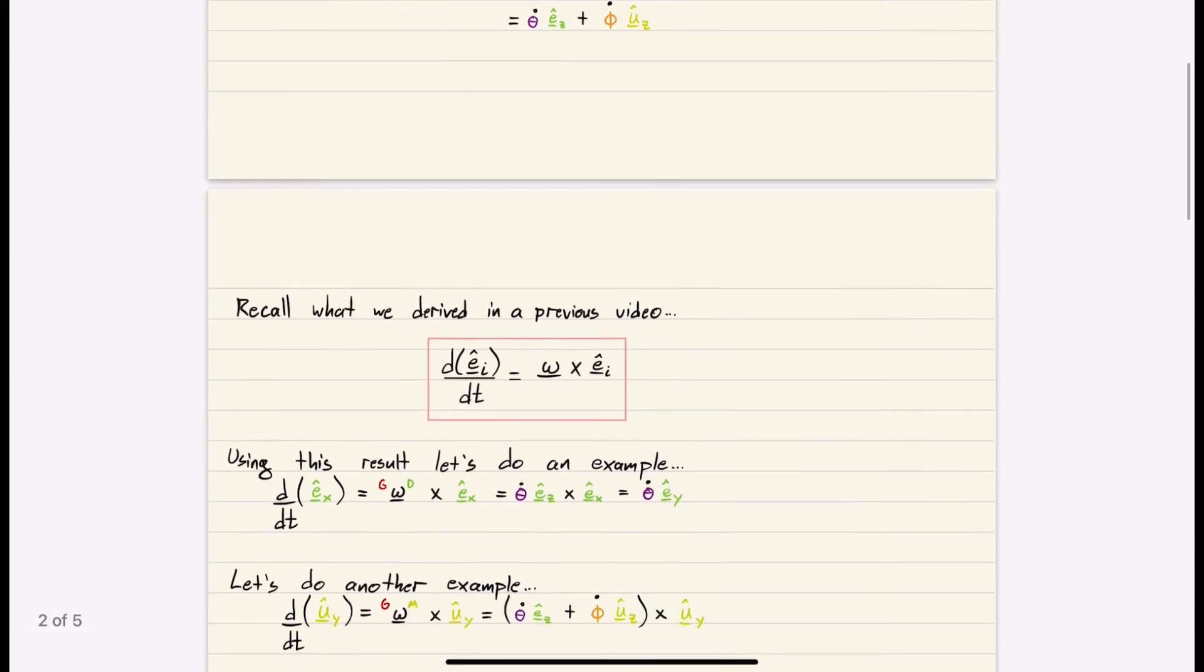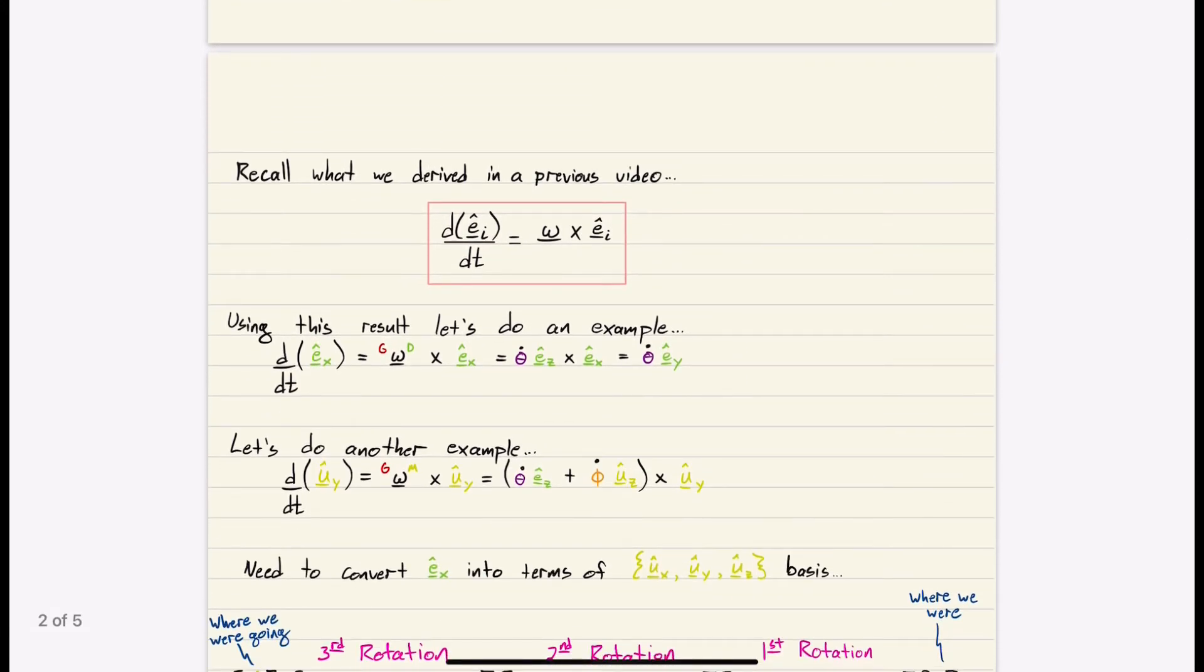So let's go ahead and find the rate of change of some of these unit basis vectors with respect to ground. Recall what we derived in that previous video, this property, where the rate of change of a unit basis vector in a rotating frame is equal to the absolute angular velocity crossed with the vector itself. So using this result, let's do an example. So let's find the rate of change of the green EX direction with respect to time.